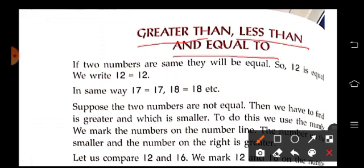So children, if two numbers are the same they will be equal. Suppose 12 is equal to 12. In the same way 17 is equal to 17, and 18 is equal to 18. So we write this sign of equal, and suppose two numbers are not equal.